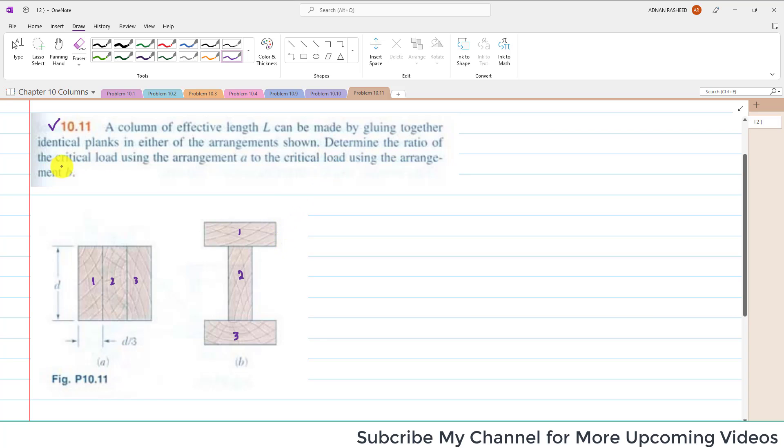Determine the ratio of critical loads using arrangement A to the critical load using arrangement B. So what we have to find is P_critical of A to P_critical of arrangement B. You have to find this ratio.